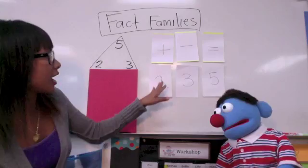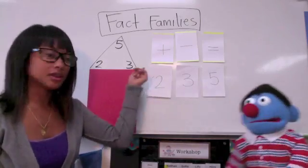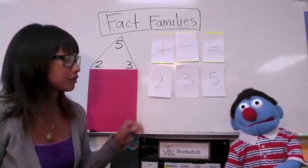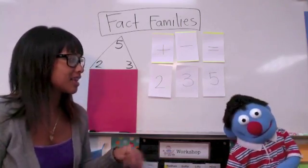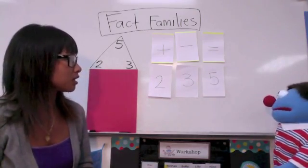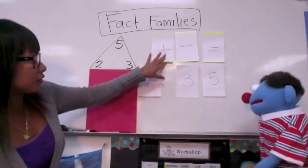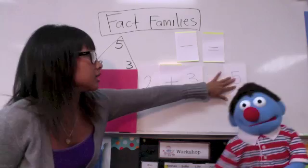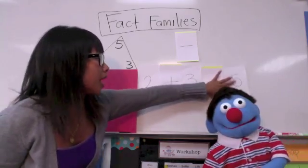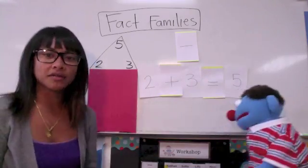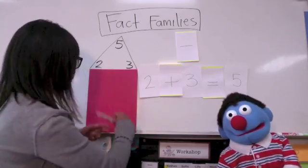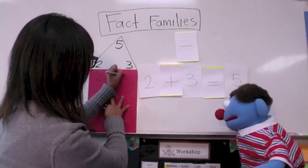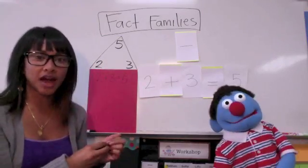So say I have the numbers 2, 3, and 5. That's my fact family. And they're going to go together in some way so that I can add them, and then they can equal one of the numbers.